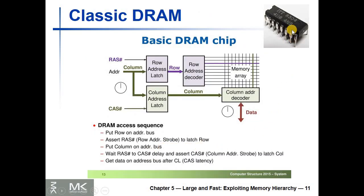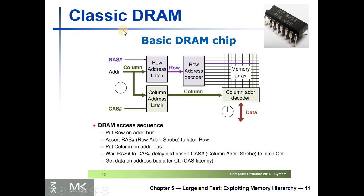This is the classic DRAM chip. Such chips were very popular 40 years ago. The main design objective was to build cheap chips, because we need many of them to achieve high memory storage capacity. In order to reduce the cost, the package should be small and the number of pins minimized.